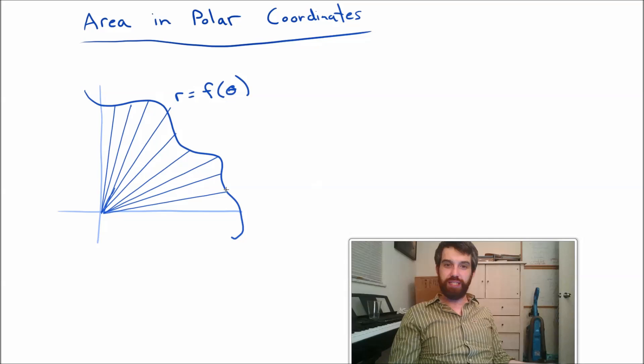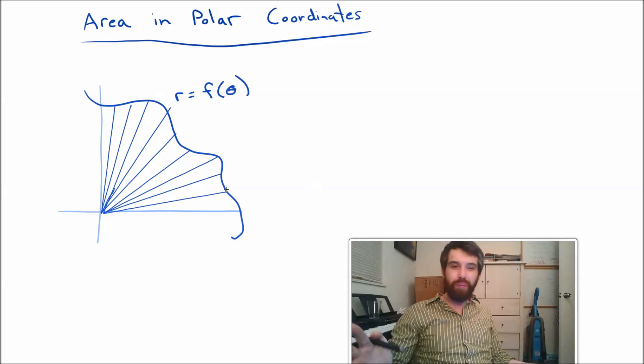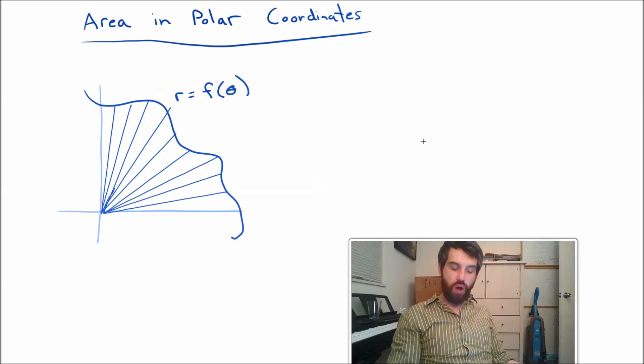What my approach is, is I'm going to try to figure out the areas of these triangles, and I'm going to say that the sum of the areas of these things that are approximately triangles is going to be the area of the total region. I'll take sort of a limit, and I'm going to call that an integral formula.